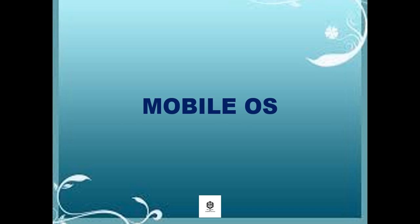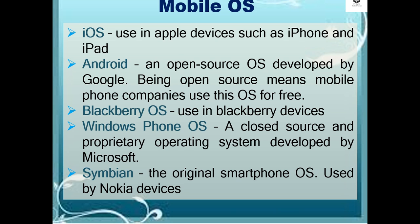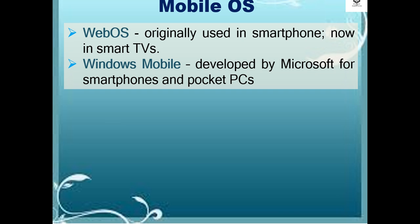Now, how about mobile operating systems? Examples of mobile OS include iOS, used in Apple devices such as the iPhone and iPad; Android, an open-source OS developed by Google — being open source means mobile phone companies can use this OS for free; BlackBerry OS, used in BlackBerry devices; and Windows Phone OS, a closed-source and proprietary operating system developed by Microsoft for smartphones.